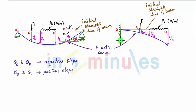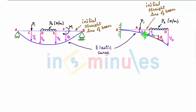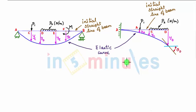Similarly we can show slopes on the cantilever beam. Theta_C at point C and theta_D at point D are shown, along with theta_A. All three slopes — theta_A, theta_C, and theta_D — are negative slopes on the cantilever beam.